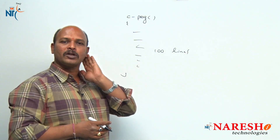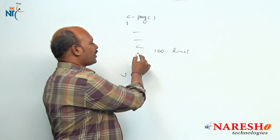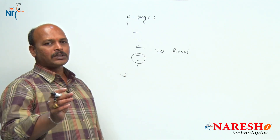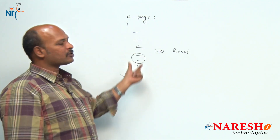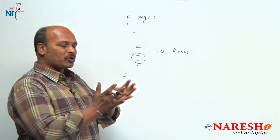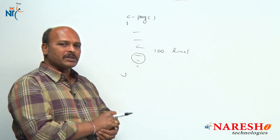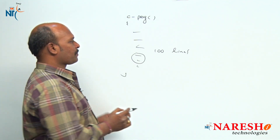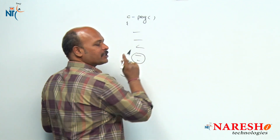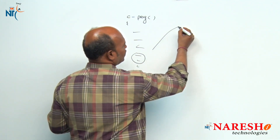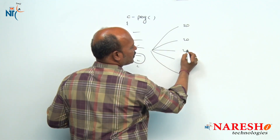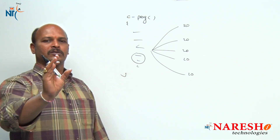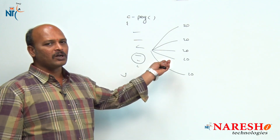We have to check all 100 lines for the error, which takes more time. Also, suppose I want to execute only 10 lines — since the 10 lines are not separated, to execute those 10 lines I have to execute the total program. Due to this, program size is increased, and when the program is big, performance is reduced. That is why I am going to divide this 100-line program into several pieces — 20 lines each.